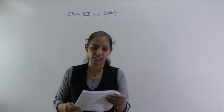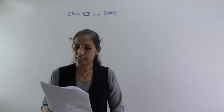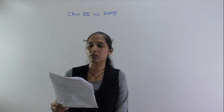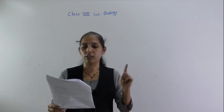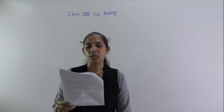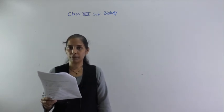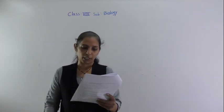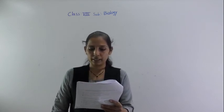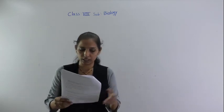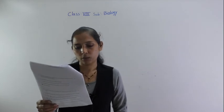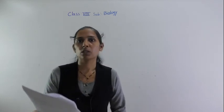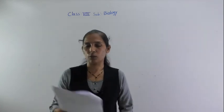Question number 72: which statement is correct? Among the four statements, the correct one is statement number 2 — chain pump is the traditional method of irrigation. Question number 73: the monsoon season in our country is during the months of June to September. Question number 74: organic manure is considered better than fertilizers because it enhances water holding capacity of soil, makes soil porous, and improves soil texture. Option number 4 is correct: all of the above.